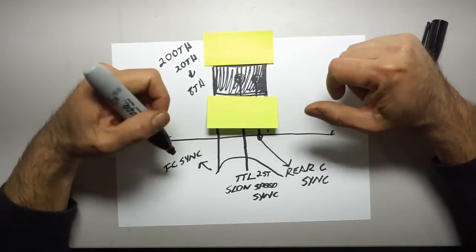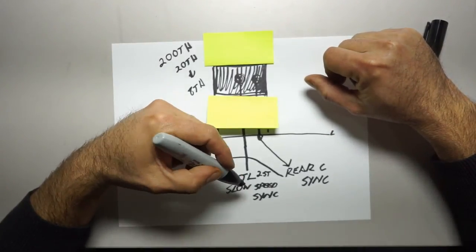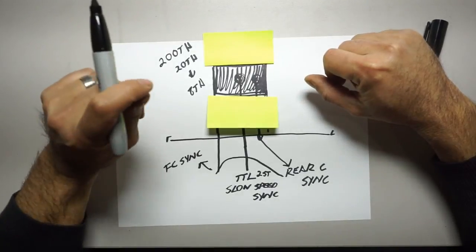Okay. So there you go. There's your first curtain, slow speed sync, TTL, and rear sync. So hopefully that makes sense.